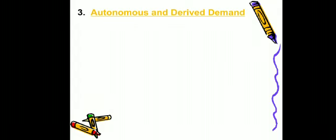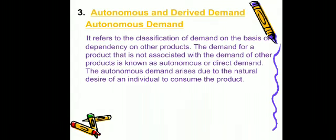Next is autonomous and derived demand. Autonomous and derived demand can be classified on the basis of dependency on other products — meaning how dependent products are on each other. Autonomous demand: the demand for a product that is not associated with the demand of another product is known as autonomous or direct demand. Where a product's demand does not depend on or is not affected by any other product, that is autonomous or direct demand.